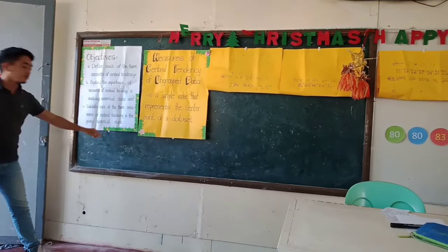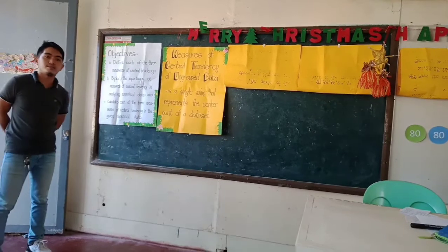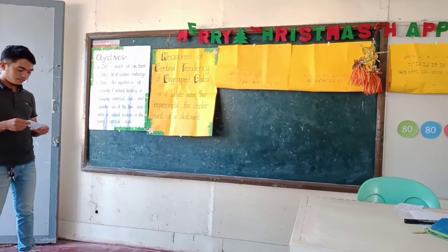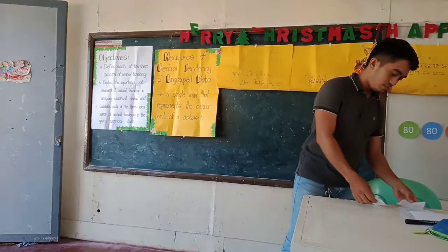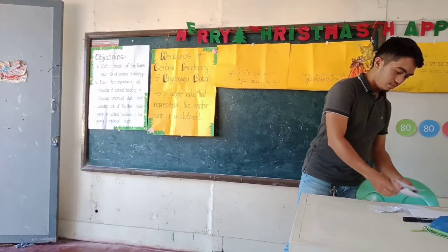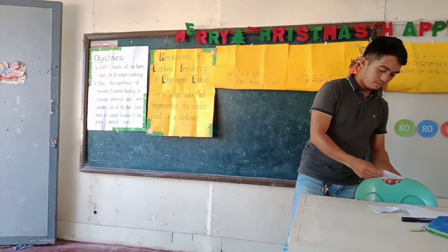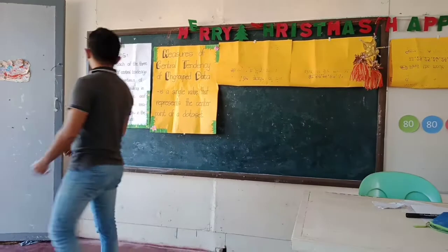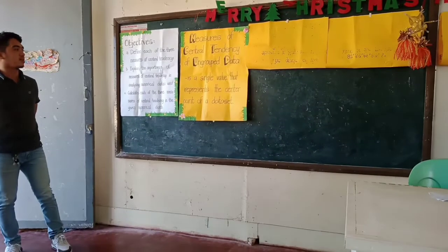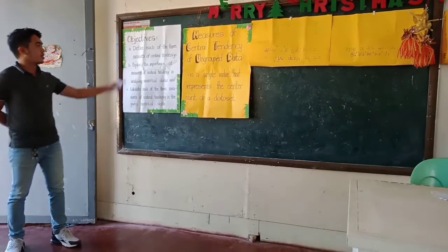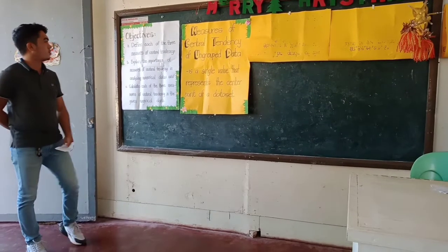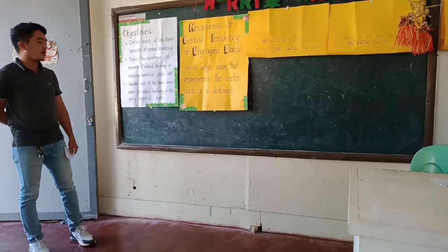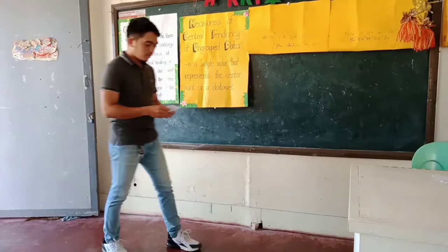Please read our objectives this morning. So Mr. LJ, can you please read the objectives? Objectives: A — Define each of the three Measures of Central Tendency. B — Explain the importance of Measures of Central Tendency. And C — Calculate each of the three Measures of Central Tendency. So this morning, you will be asked to define, explain, and calculate each of the three Measures of Central Tendency. Am I understood, class? Yes, sir.